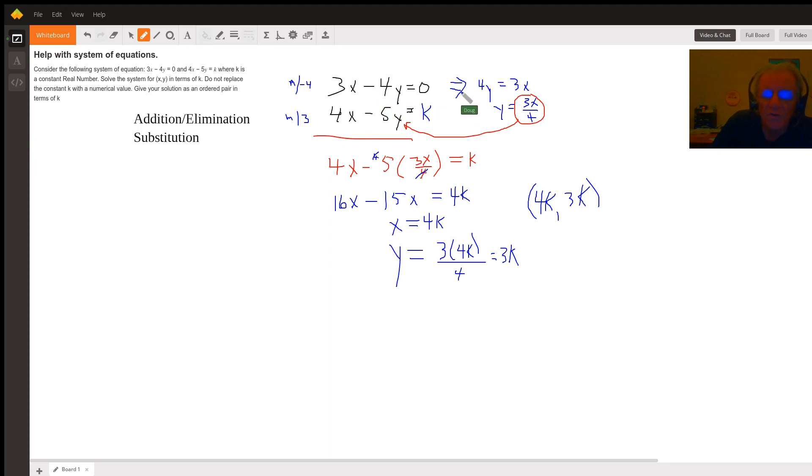If I solve this first equation for y, I get 4y = 3x, so y = 3x/4. Now I can substitute that expression into the second equation, so I replace this y with 3x/4.